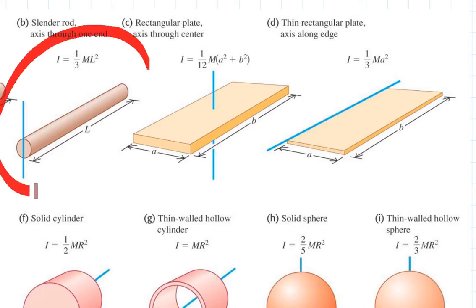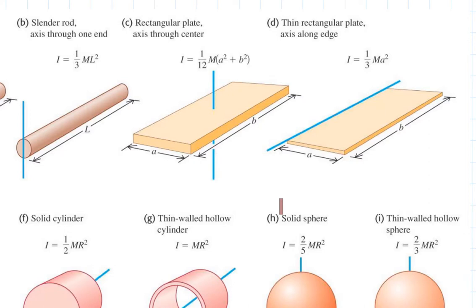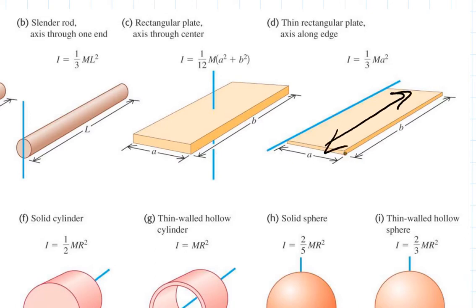Remember what we got for a rod rotating about its endpoint? One-third M L squared, where L is the length of the rod. This is one-third M A squared, where A is the length of the door away from the axis of rotation. It's the same situation. The rod rotating about its endpoint is exactly the same as the door rotating about the hinge.